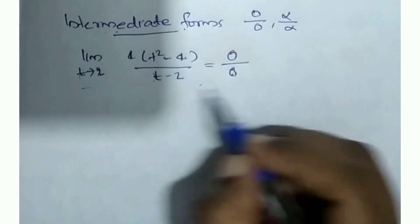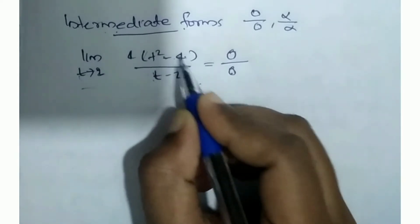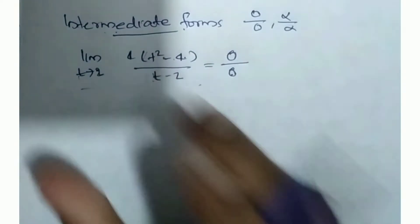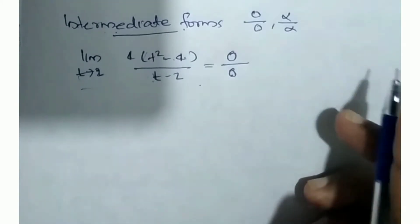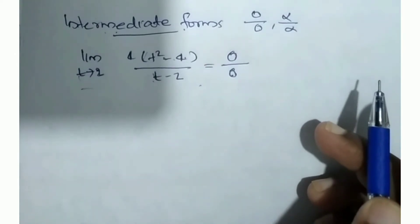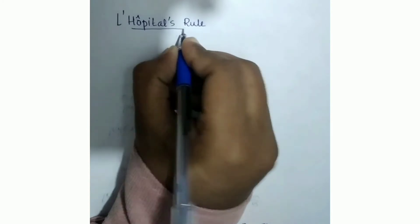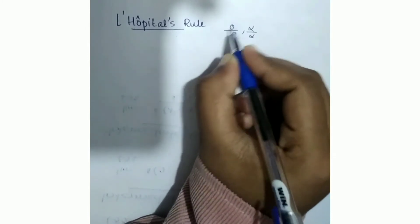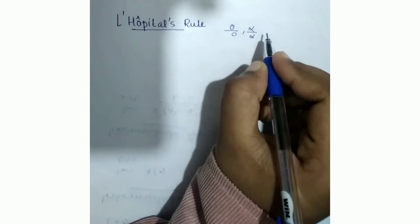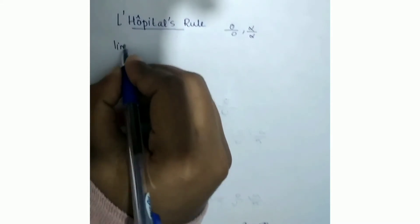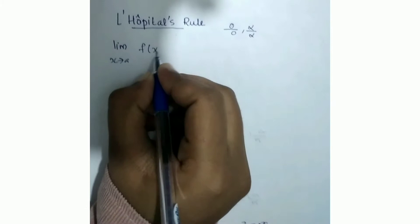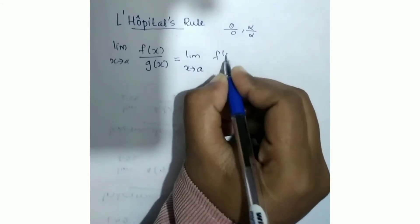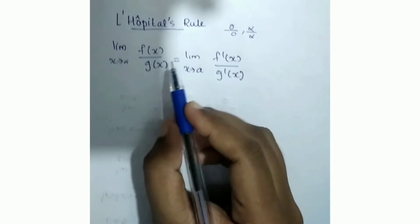In other words, if we have a situation like this, we can solve the problem using the L'Hôpital's rule. What is the L'Hôpital's rule? We can apply it for 0 by 0 or infinity by infinity indeterminate forms. The rule states: limit x tends to a of f(x) by g(x) is equal to limit x tends to a of f'(x) divided by g'(x).